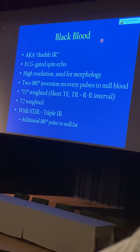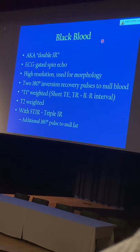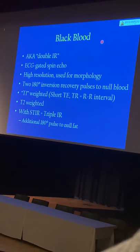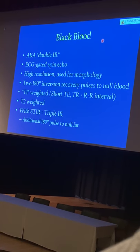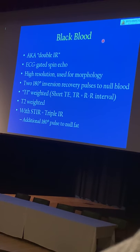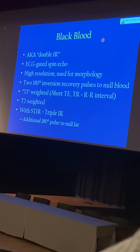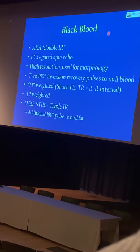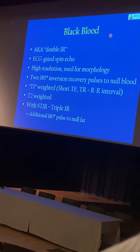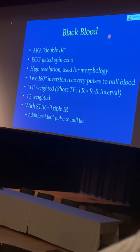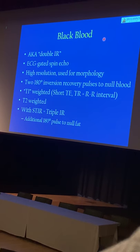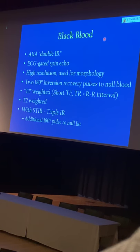The black blood images are also called double IR images because there are two 180-degree inversion pulses. The first 180-degree inversion pulse inverts all of the spins within the imaging volume, but the second 180-degree pulse is slice selective, so it restores the signal of the myocardium within that slice. The blood moving from outside the slice will pass through the null point as it comes into your slice, so that the signal from the incoming blood will be black.